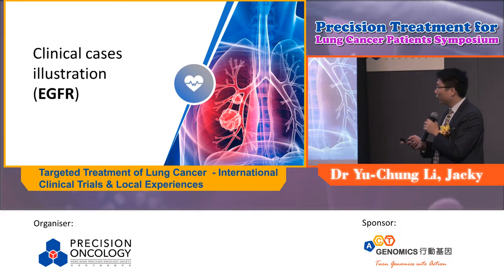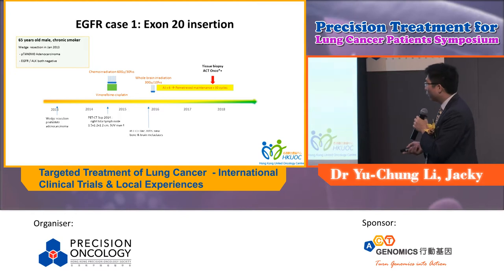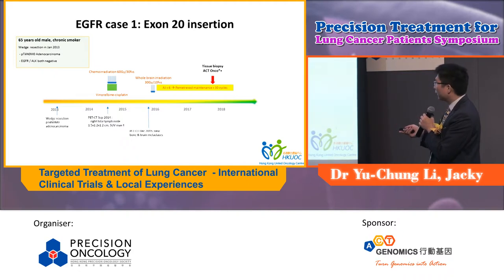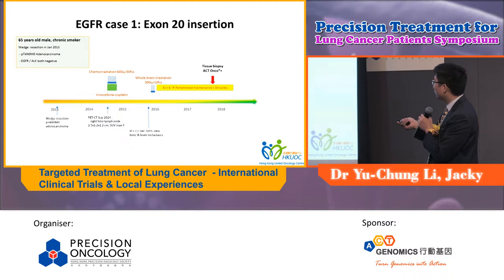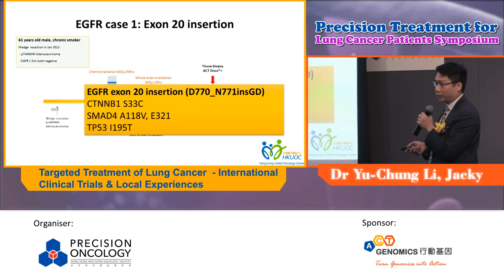The second part illustrates a number of real clinical cases, beginning with an EGFR case. It's a 65-year-old chronic smoker with prior resection, T4N0 stage, EGFR-negative. There was an isolated hilar relapse one year later, treated with chemo-irradiation. Later there was brain and bone progression treated with chemotherapy, and at the time of disease progression I sent for the add-on code NGS, which came back showing exon 20 insertions.